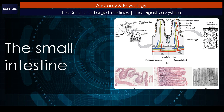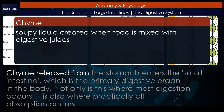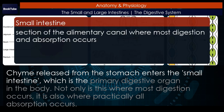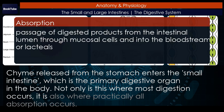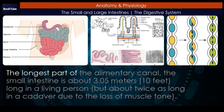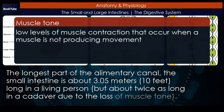The small intestine. Chyme released from the stomach enters the small intestine, which is the primary digestive organ in the body. Not only is this where most digestion occurs, it is also where practically all absorption occurs. The longest part of the alimentary canal, the small intestine is about 3.05 meters (10 feet) long in a living person, but about twice as long in a cadaver due to the loss of muscle tone.